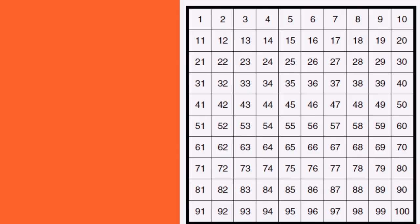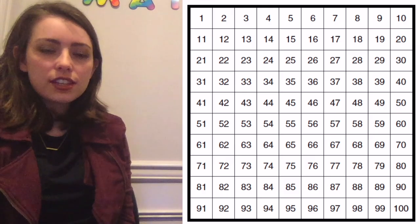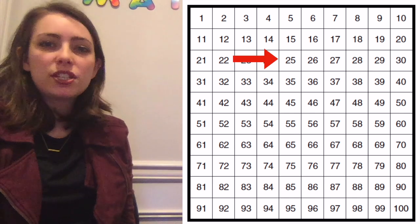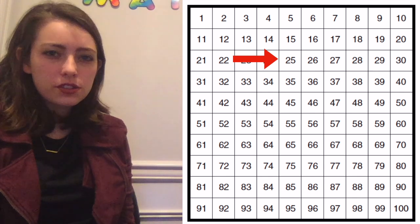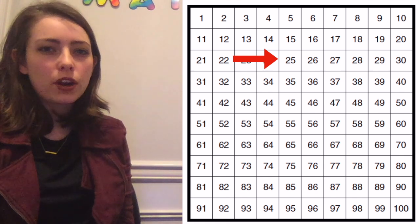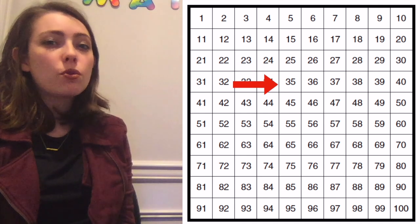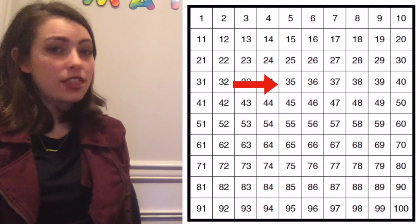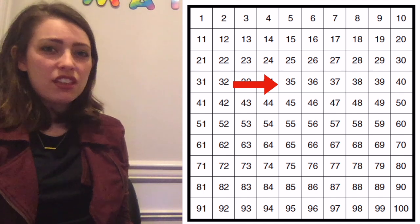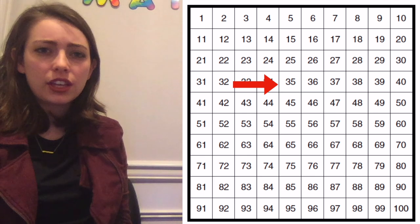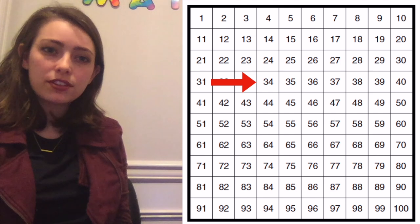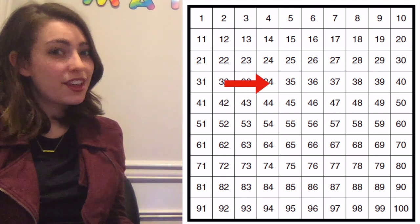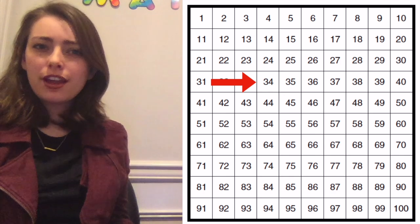If you'd like to use a 100 chart, pause the video on this screen. So let's look at this together. On Monday, I made 25 cookies, so I start at 25. Then on Tuesday, I made 10 more, which means I need to go down one space, and that puts me at 35. Then on Wednesday, I had one less cookie, which means I need to go one over to the left. And that puts me at 34. I have 34 cookies.